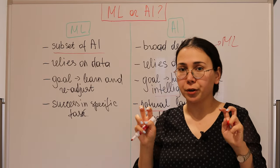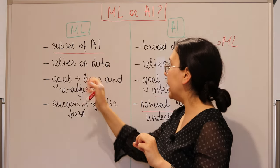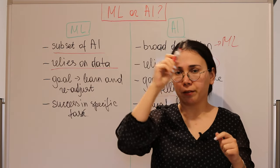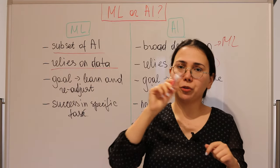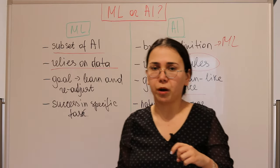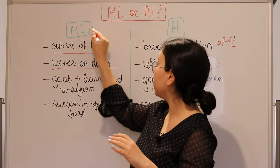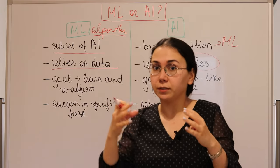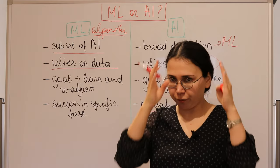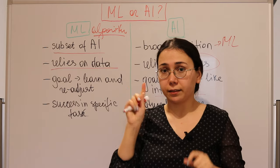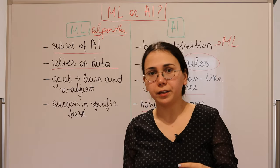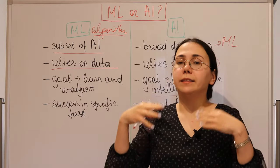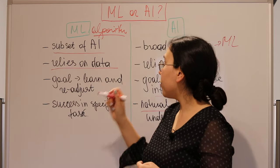Machine learning, on the other hand, is a quote-unquote dumber version of AI — it relies on data. For example, we feed it data: baby one Adam has two legs, two arms; baby two Jane has two legs, two arms; and so on. Machine learning is essentially an algorithm — a bunch of code — and from that data it can deduce that human babies have different names and that they generally have two legs and two arms.